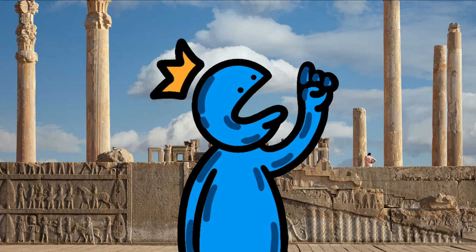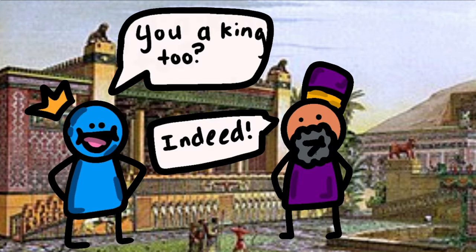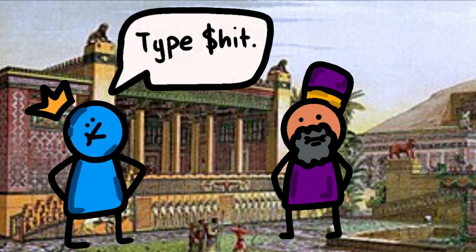It is believed that Persepolis served as the ceremonial capital of the empire and was primarily used for royal gatherings and celebrations.